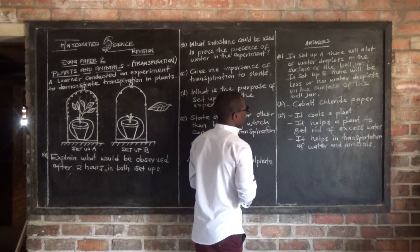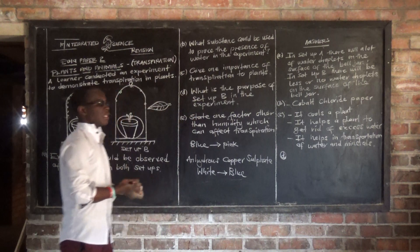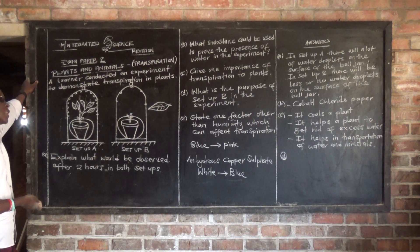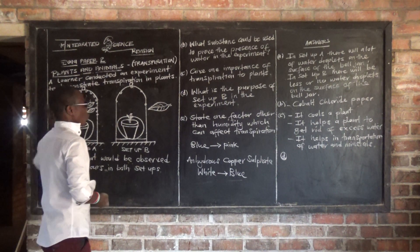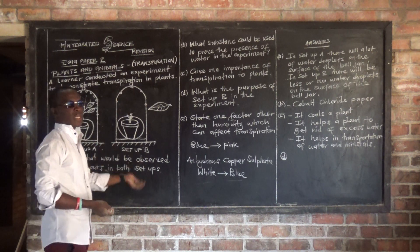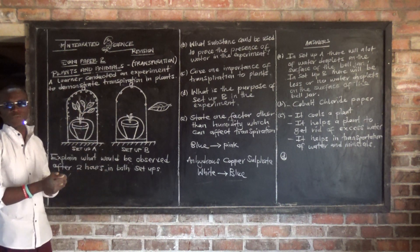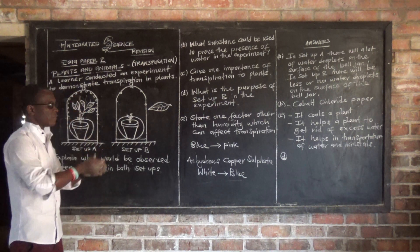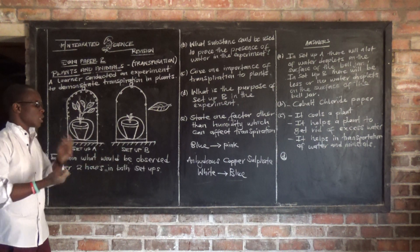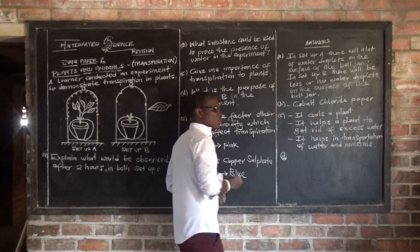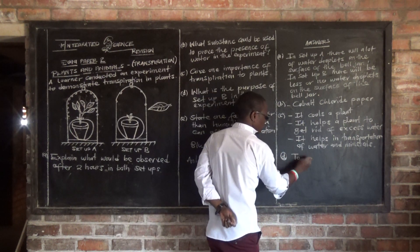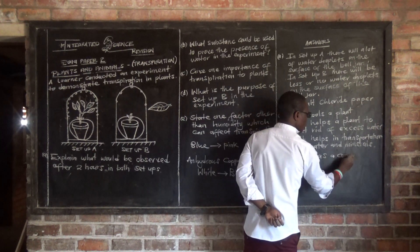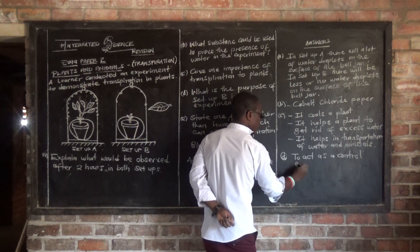Question D: what is the purpose of Setup B in the experiment? Why was this setup - a potted plant which does not have leaves - included in this experiment? The answer is: to act as a control experiment.